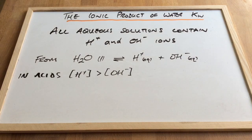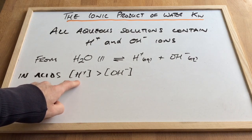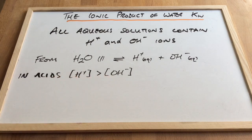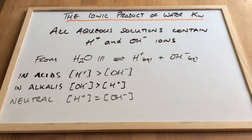So for an aqueous solution to be acidic, the hydrogen ion concentration must be greater than the hydroxide ion concentration. For a solution to be alkaline, it's the other way around. The hydroxide ion concentration greater than the H+ concentration. And obviously if a solution is neutral, the two ion concentrations are the same.